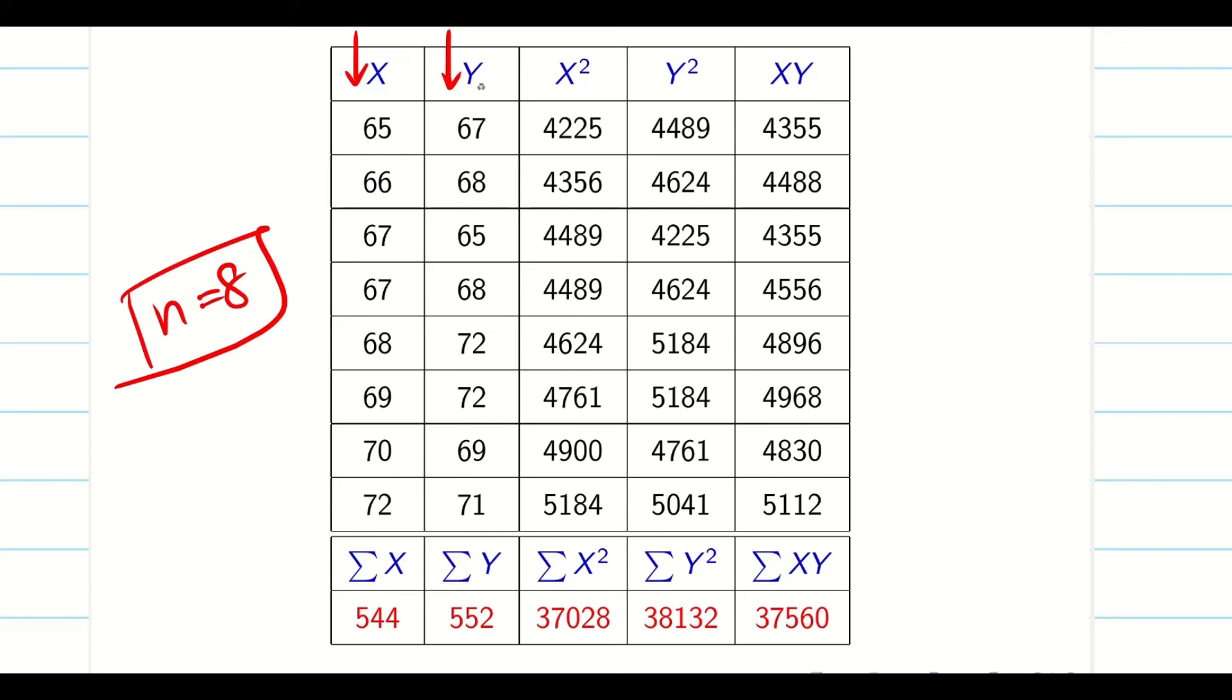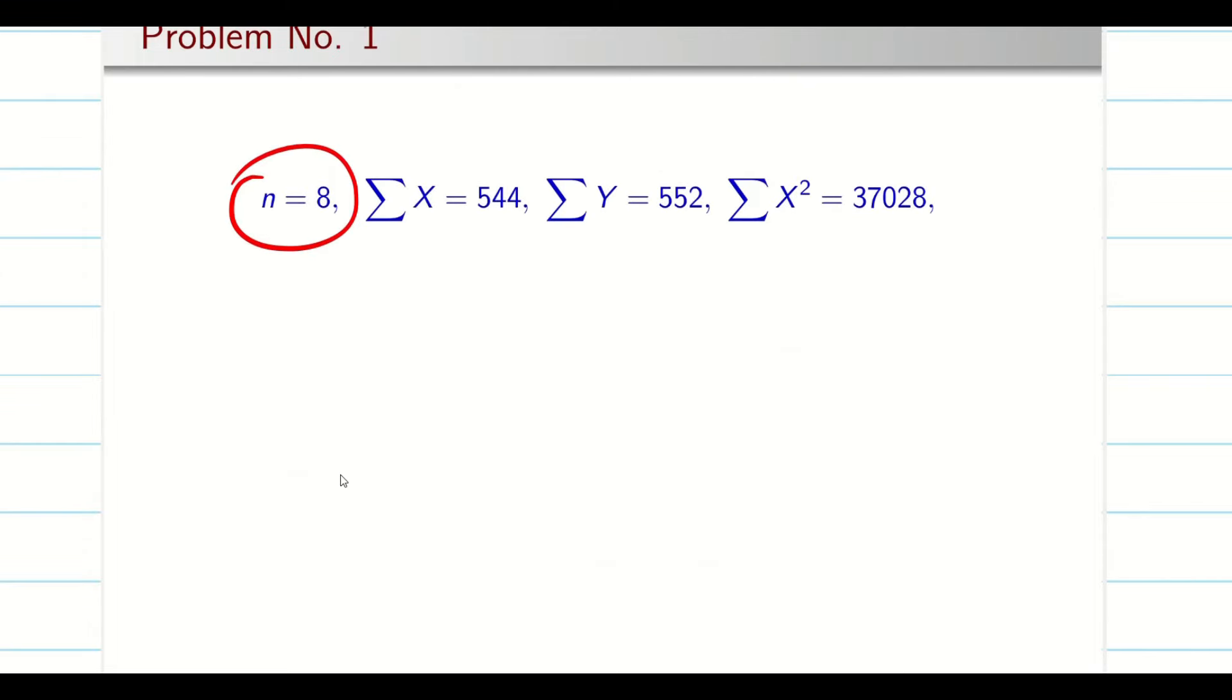You should not count both x and y and write n equal to 16 which leads to total confusion. Okay, now let us go. So n is 8, summation x, summation y, x square, y square, xy, everything we found from the table.